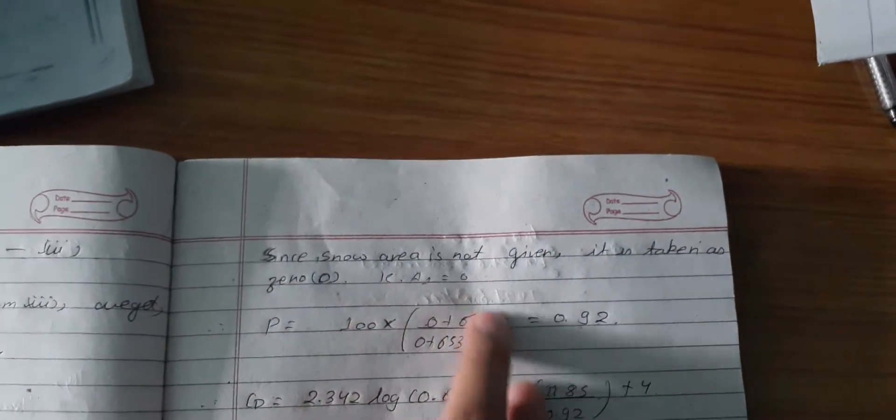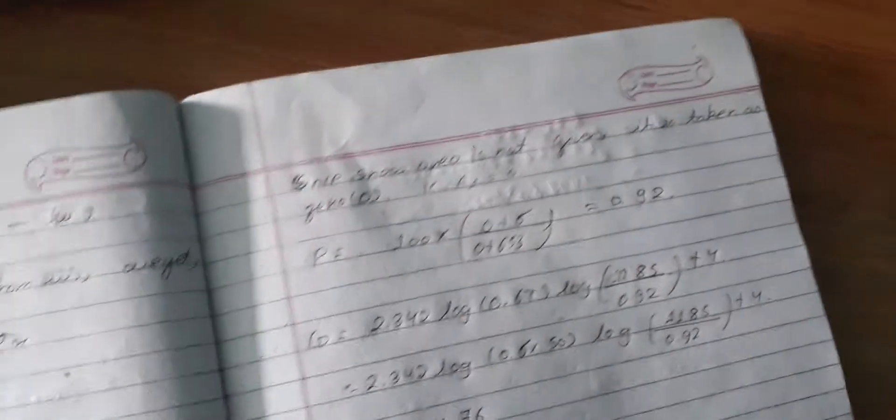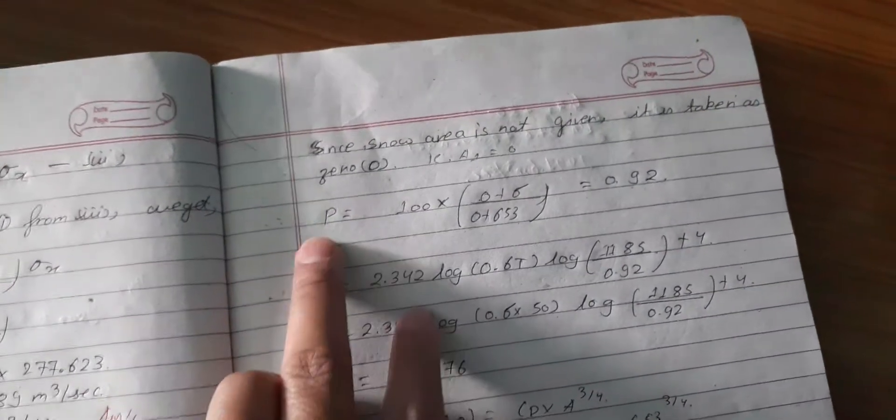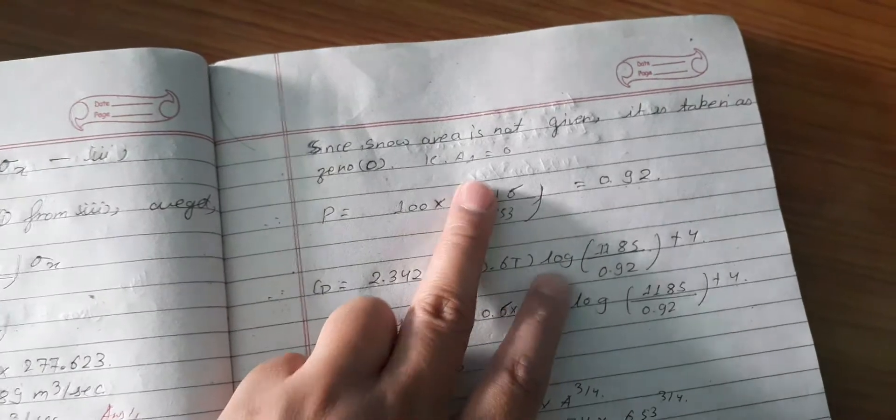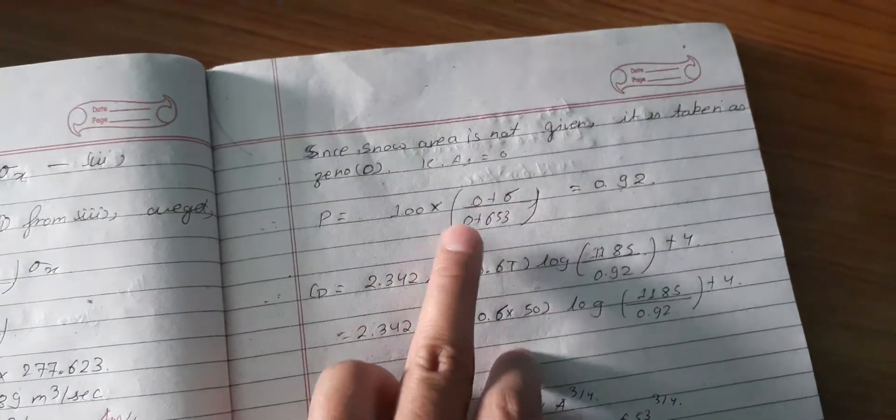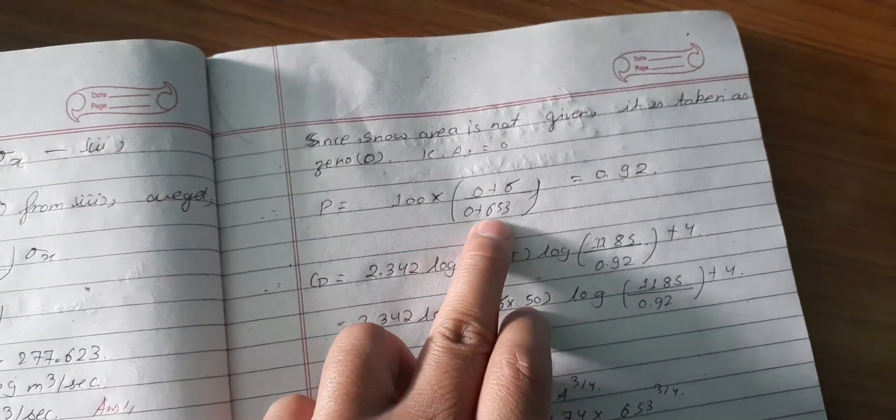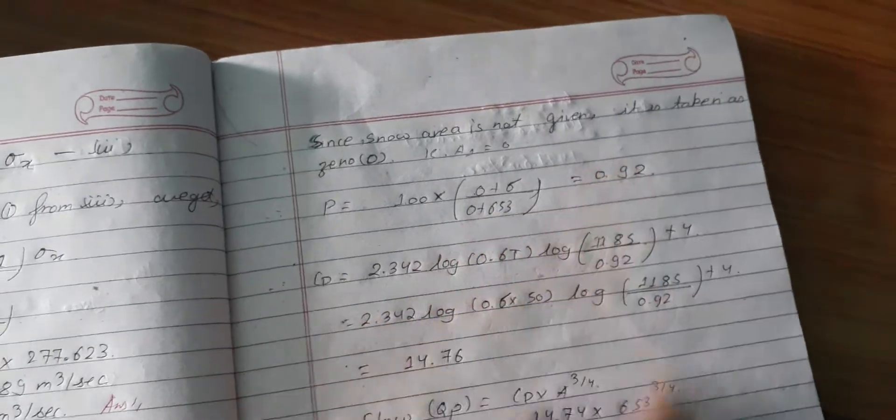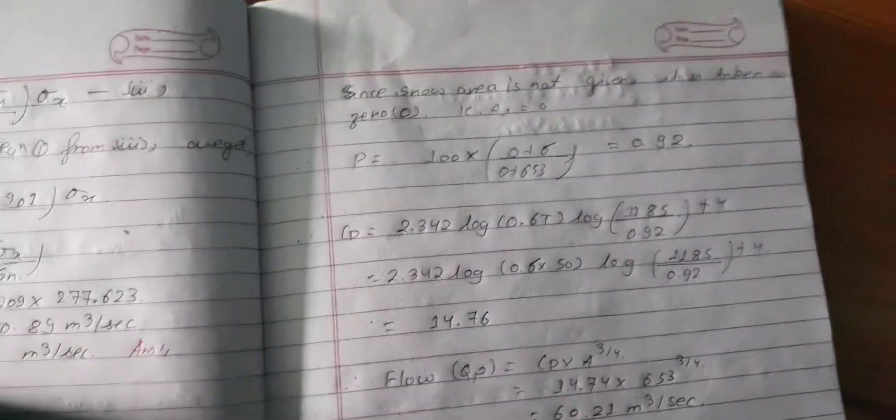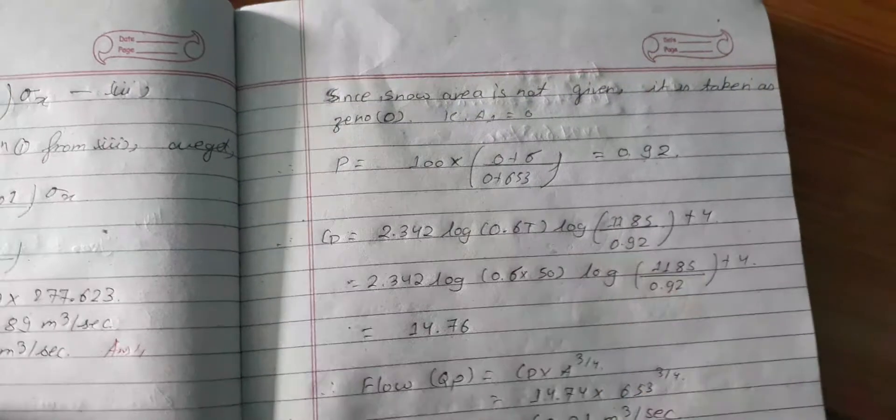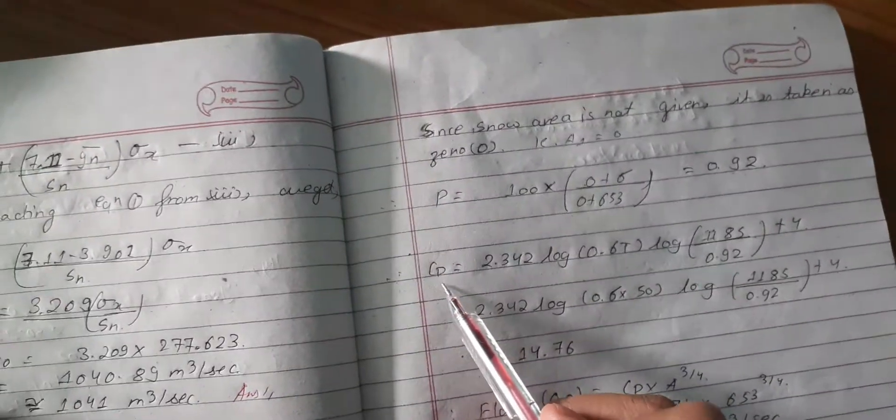The snow area becomes zero. Now the parameter P = 100 × (0 + 6)/(0 + 653). I have directly solved this and got P = 0.92.